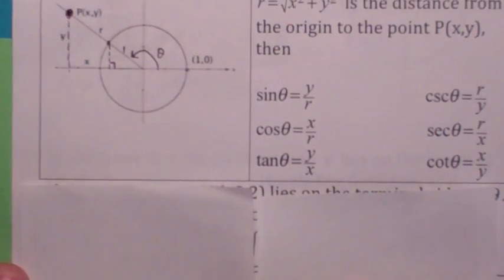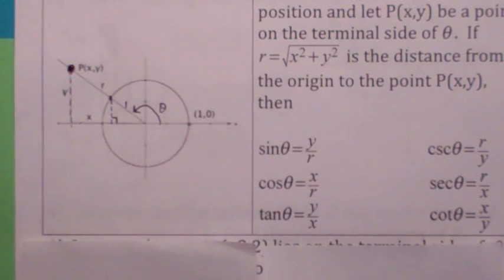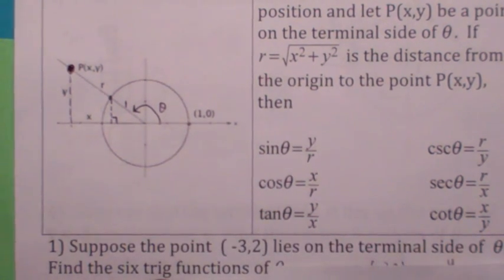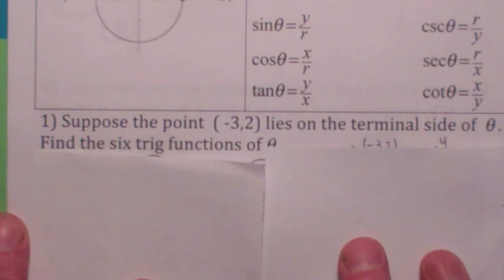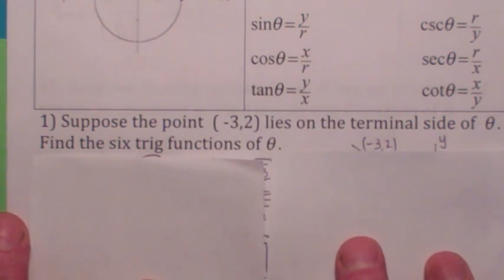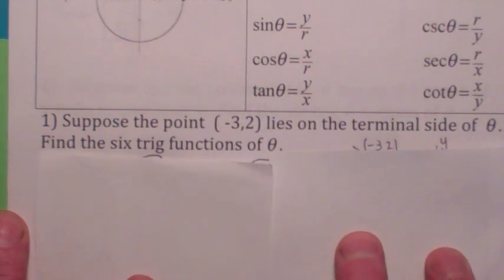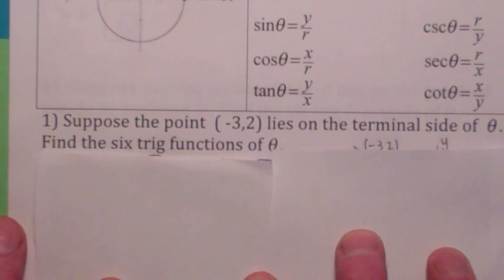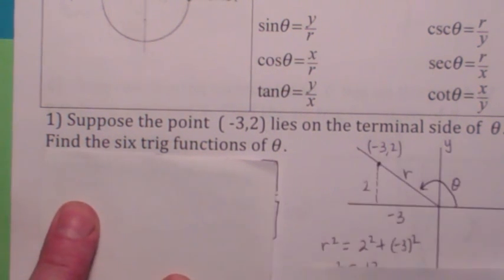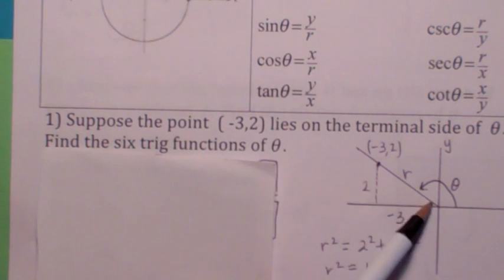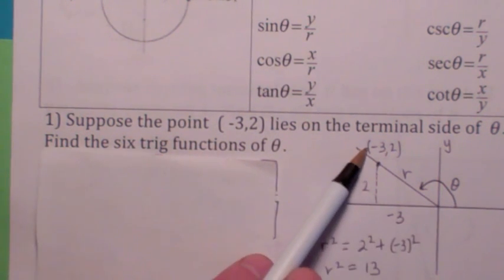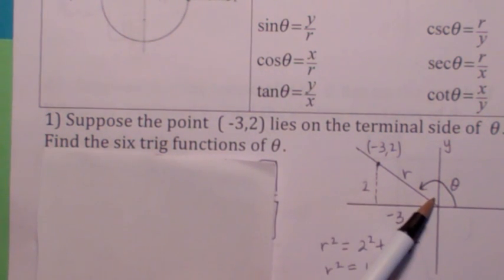All you need to find the trig functions of an angle is a point on the terminal side. Suppose you're given the point (−3, 2) on the terminal side of theta. The best advice I can give you is to always draw a picture. If (−3, 2) lies on the terminal side of theta, it looks like you're in the second quadrant. Note that theta does not have to be a positive angle — it just doesn't make any difference how you got there; all that matters is where you end up.